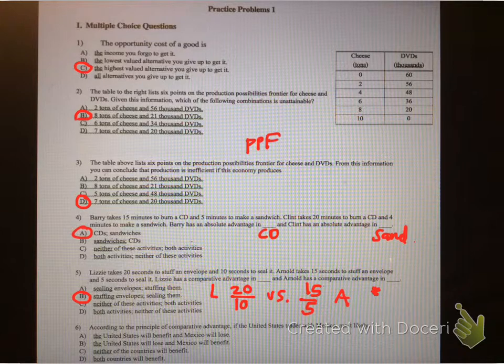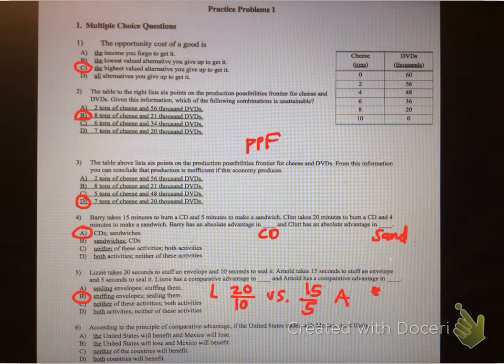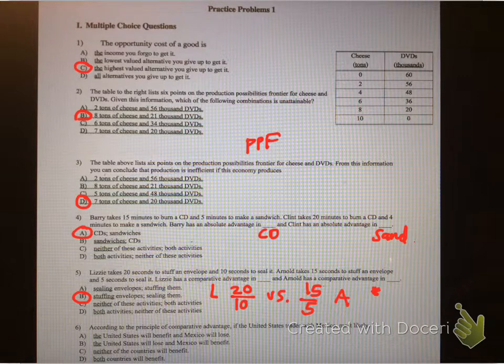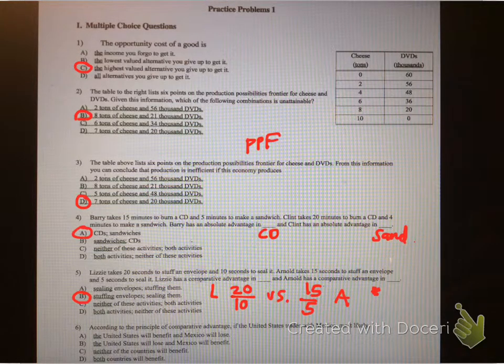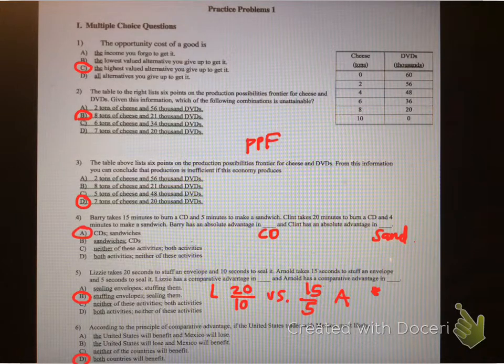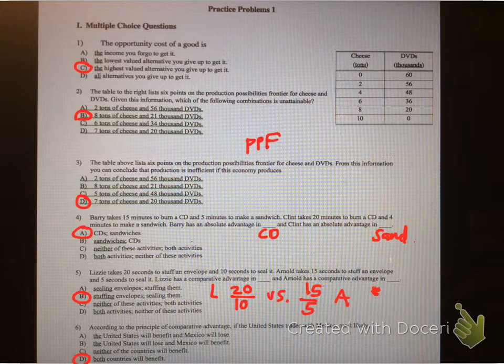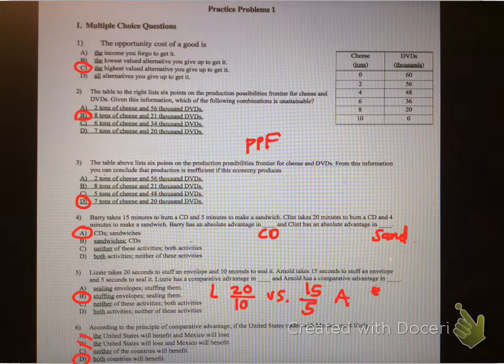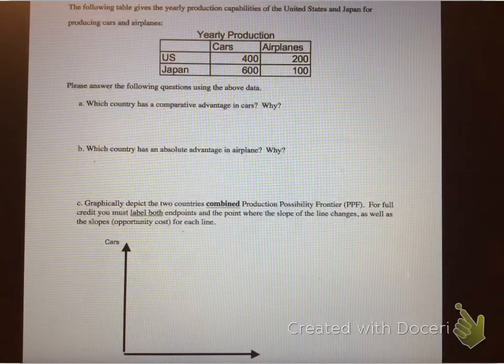Okay, so according to the principle of comparative advantage, if the United States trades with Mexico, it's most likely what? Well, both countries want to benefit, pretty much. That's the only answer that makes sense. The U.S. will benefit and Mexico will lose. Well, that doesn't make sense for Mexico. The U.S. will lose and Mexico will benefit. That doesn't make sense for the U.S. Neither will benefit. Well, why would they make any agreement? So the answer has to be D.